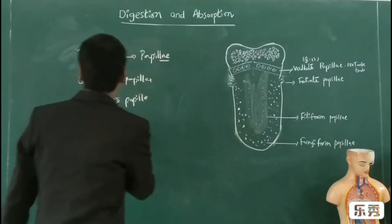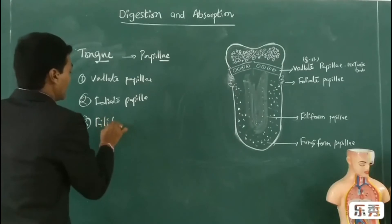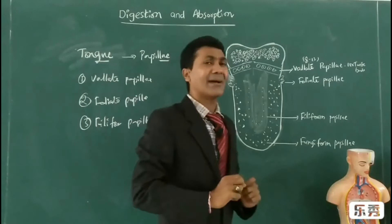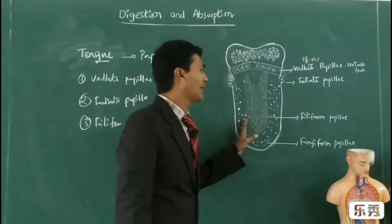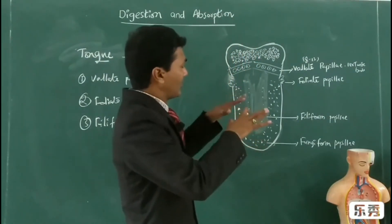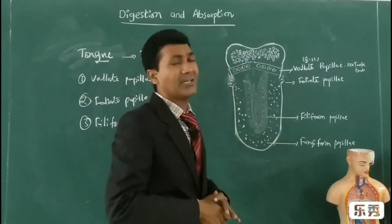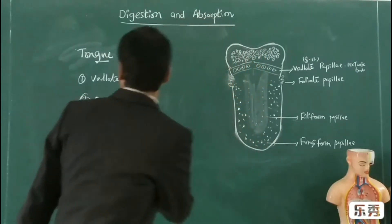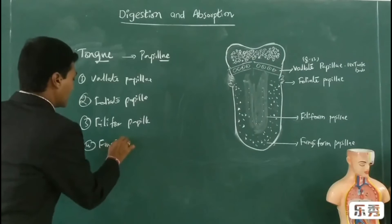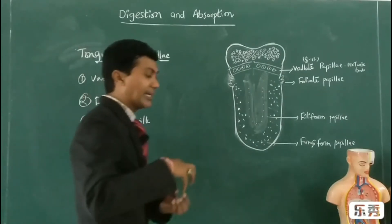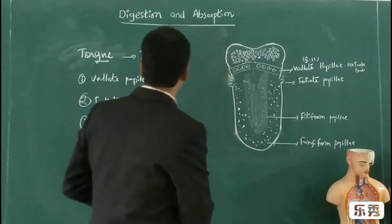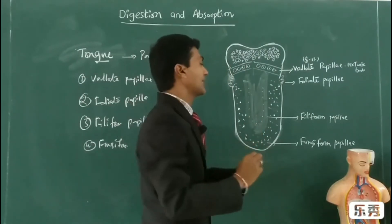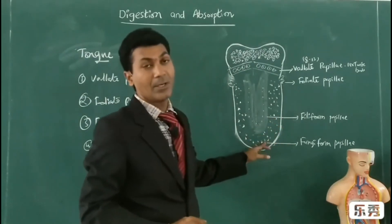And the third one, filiform papillae, which are smaller in size and more numerous — the majority of the tongue's surface is composed of filiform papillae, which have mostly numerous taste buds. And the last one, fungiform papillae, which look like fungi — they are red and oval-shaped. Fungiform papillae are fewer than the filiform and their size is larger than the filiform.